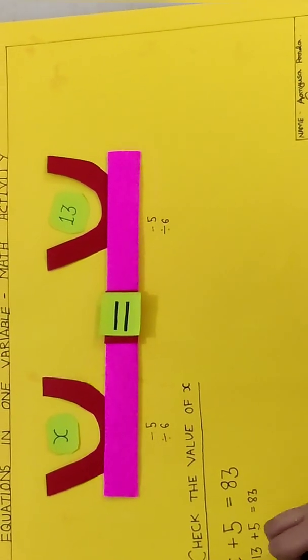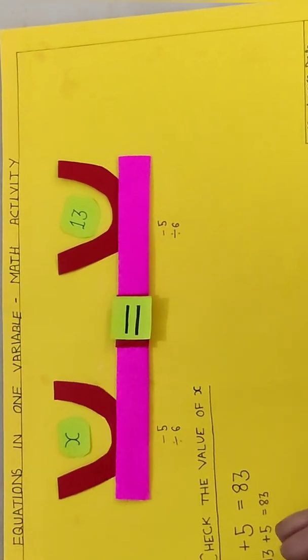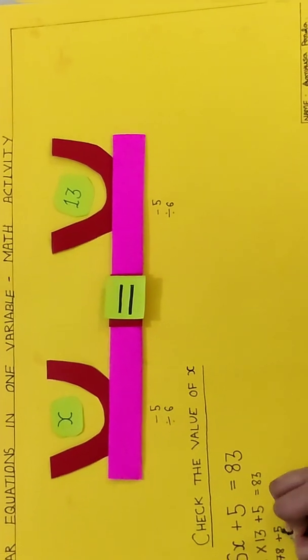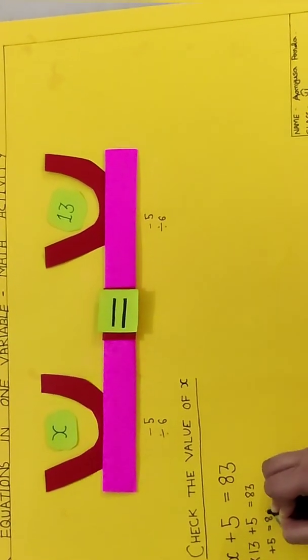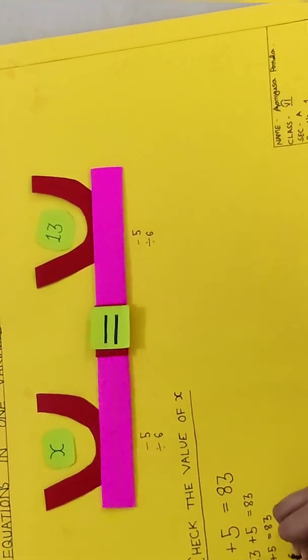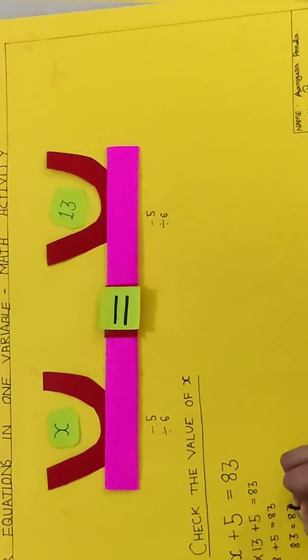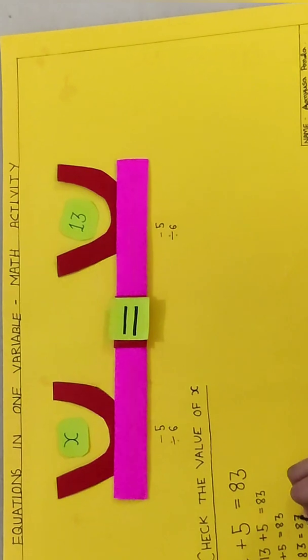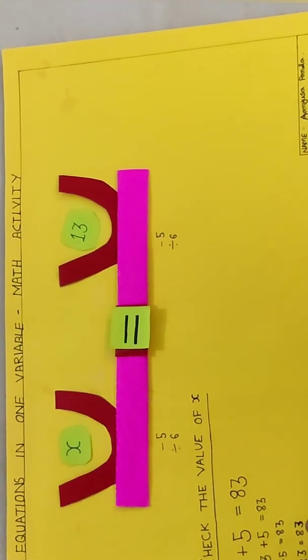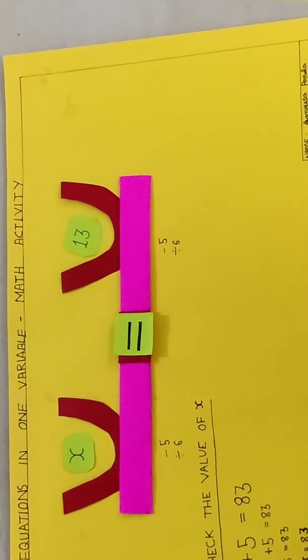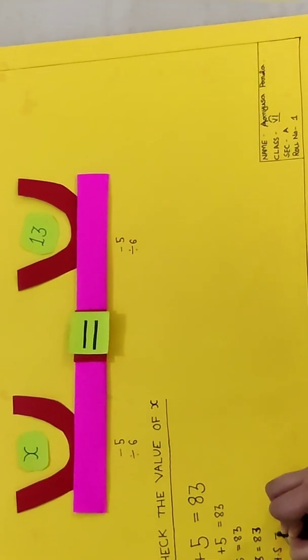So 6 into 13 equals 78 plus 5. So 83 equals 83 which means that LHS or the left hand side is equal to the RHS or the right hand side.